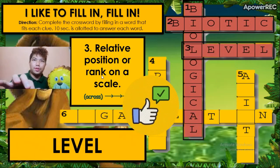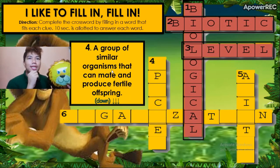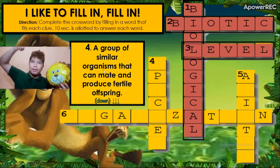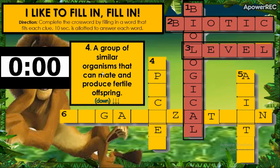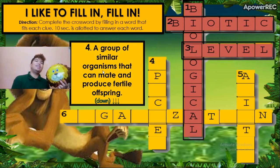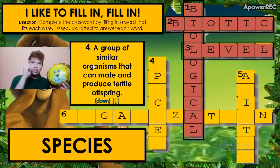Clue number four: a small group of similar organisms that can mate and produce fertile offspring. If your answer is 'species,' you are correct.